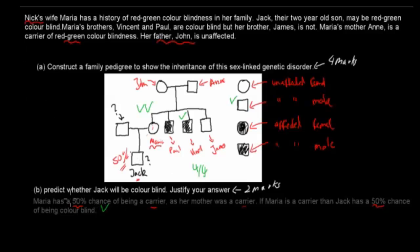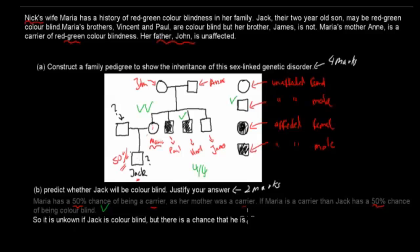That statement gets you one mark. The other mark comes from stating that it is unknown whether Jack is colorblind, but there is a chance that he is — he might be colorblind but we don't really know. That's worth two marks out of two.